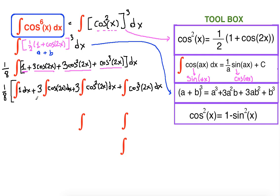Now we are going to check the integrals one by one, with one eighth in front. We can complete the first integral because we know the anti-derivative of one. The anti-derivative of one with respect to x is x. So the first integral is completely done — let's box it.